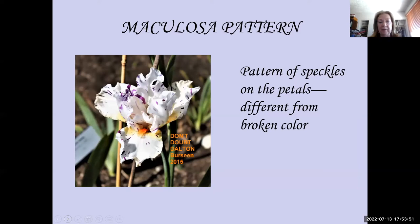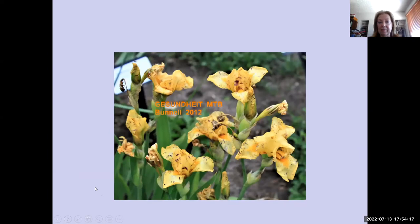The Maculosa pattern is different from broken color — it shows a pattern of speckles on the petals. The flowers are still unique; no two flowers are the same. But the flower pattern has to include specks of color, like Don't Doubt Dalton and Gesundheit, Chuck Bunnell's miniature tall bearded. You can see the petals are just flecked with the darker color, making it the Maculosa pattern.